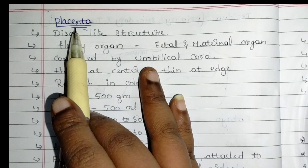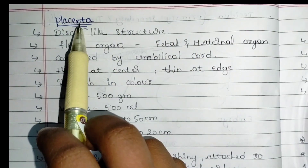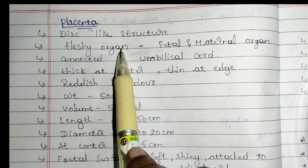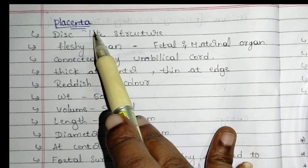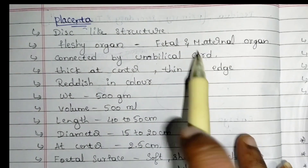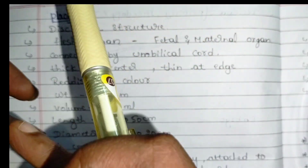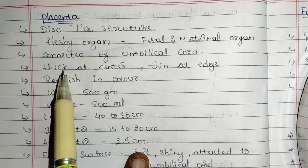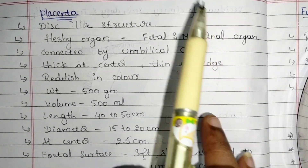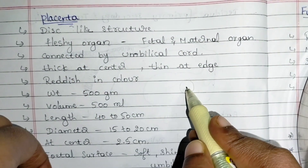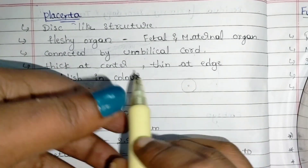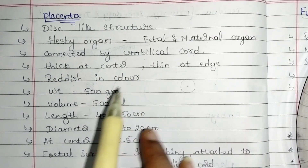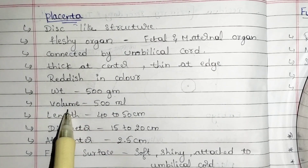Today's topic is placenta. Placenta is disc-like in shape — a round, fleshy organ. It is connected by the umbilical cord; placenta is attached to the mother and the umbilical cord is attached to the fetus, connecting them both. The placenta is thick at the center and thin at the edges. It is reddish in color and weighs around 500 grams with a volume of around 500 ml.